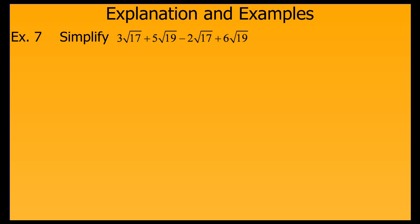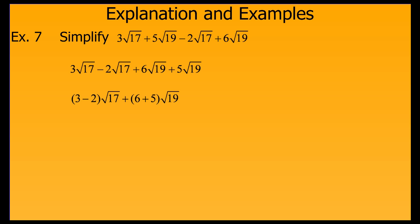Now let's look at this sum and difference problem. First, we group together like terms. Like terms are those terms that have the same radical factor. We can then combine those like terms just like if those radicals were variables. So 3 root 17 minus 2 root 17 gives us 1 root 17, and 6 root 19 plus 5 root 19 gives us 11 root 19. Note we cannot combine root 17 and 11 root 19 because they are not like terms — their radical parts are different. This is as simple as we can get it.